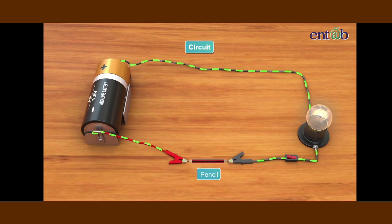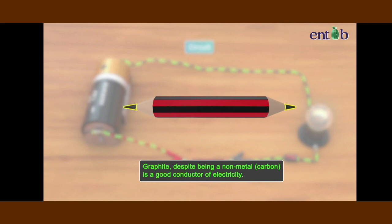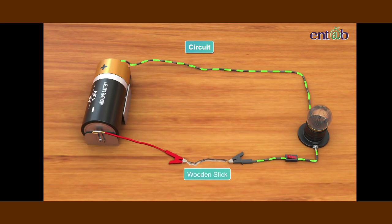Let us repeat this exercise using a pencil sharpened at both the ends. Surprise! The bulb glows again. But why is it so? It is because graphite, though a non-metal, is a good conductor of electricity.